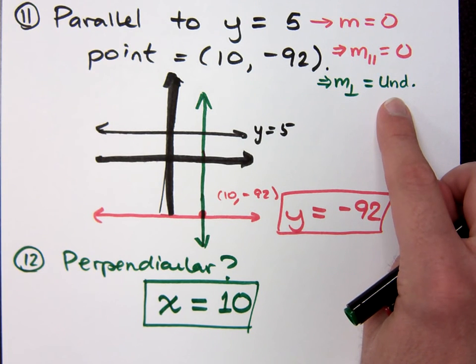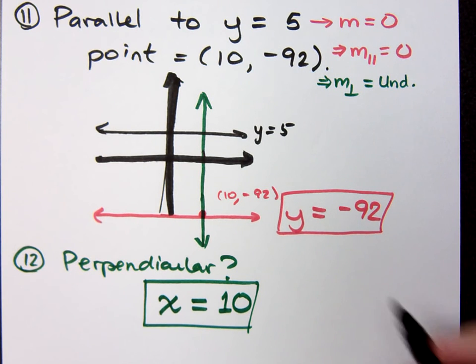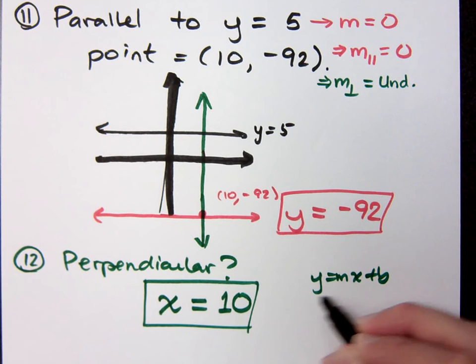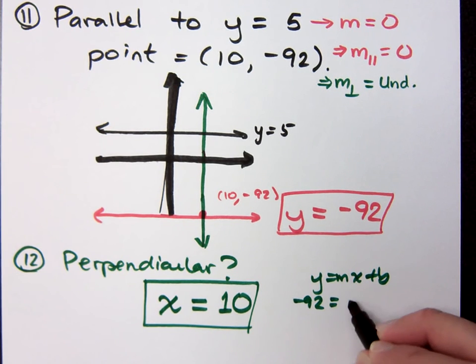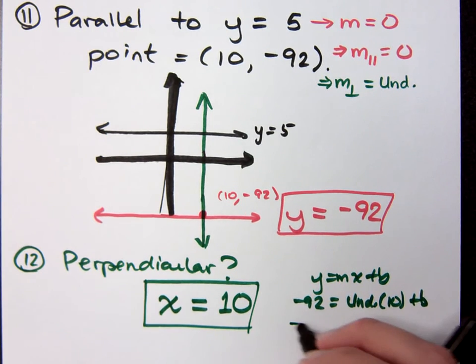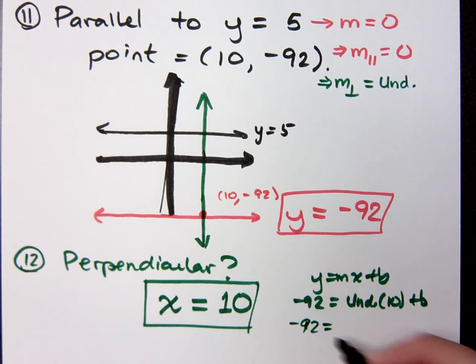If you try to use the word undefined and plug that into the slope-intercept form or the point-slope formula, it's going to look really weird. Right? Because if you try to use y equals mx plus b, well, my y is negative 92, my slope is undefined, my x is 10. So, let's see. Negative 92 equals... What's undefined times 10? You can use your calculators on this one.